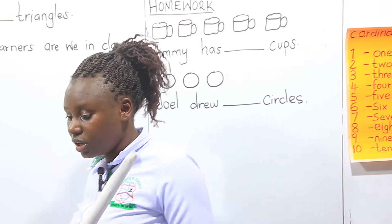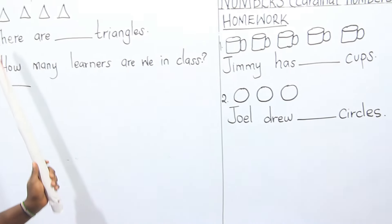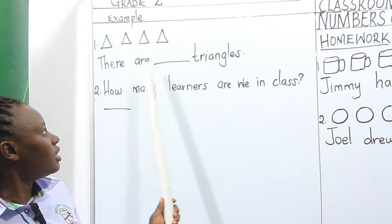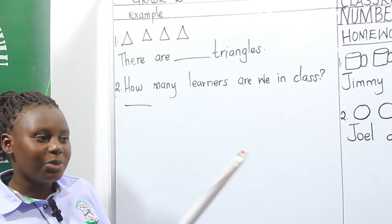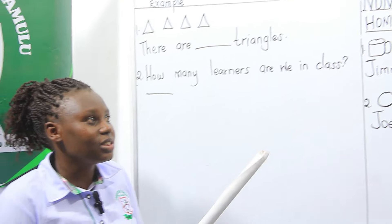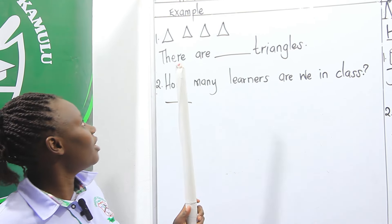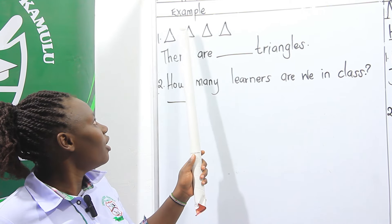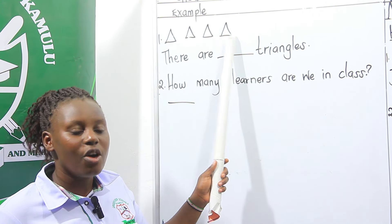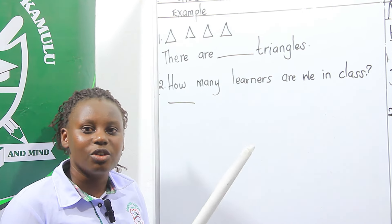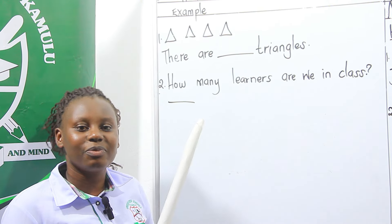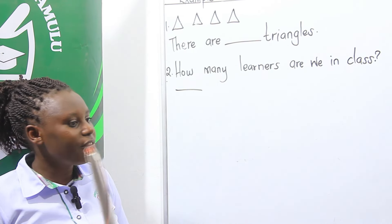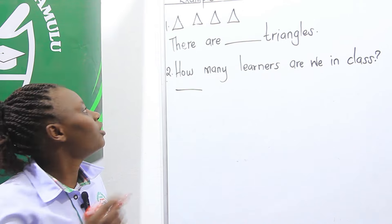For example, we are having a question here. There are dash triangles. Let's count the triangles and find how many they are: one, two, three, four. So how many triangles do we have? We have four triangles.